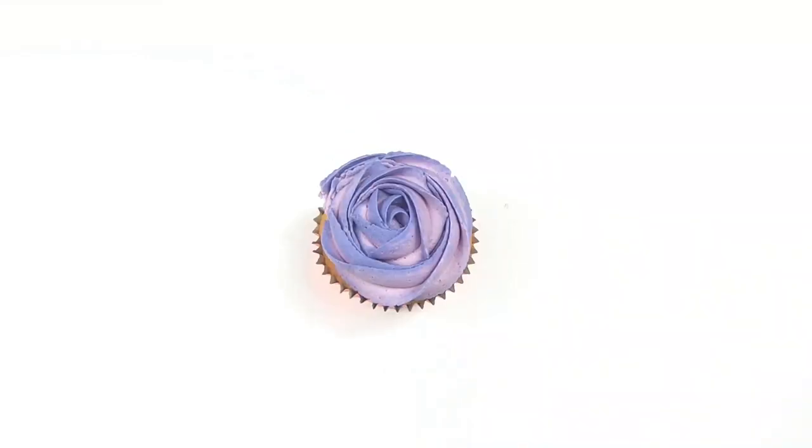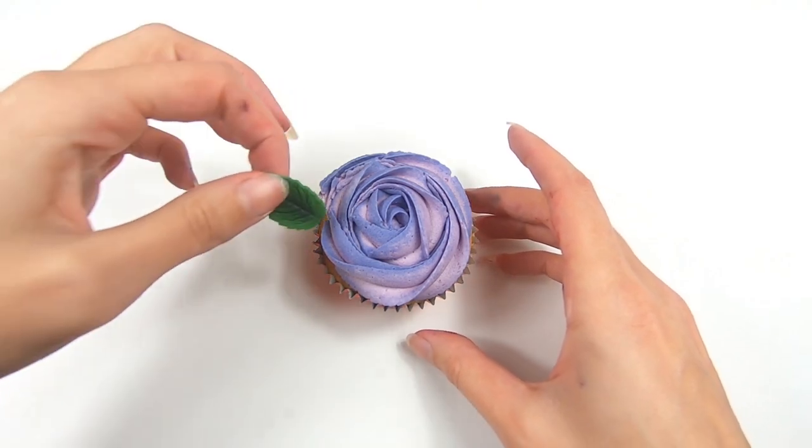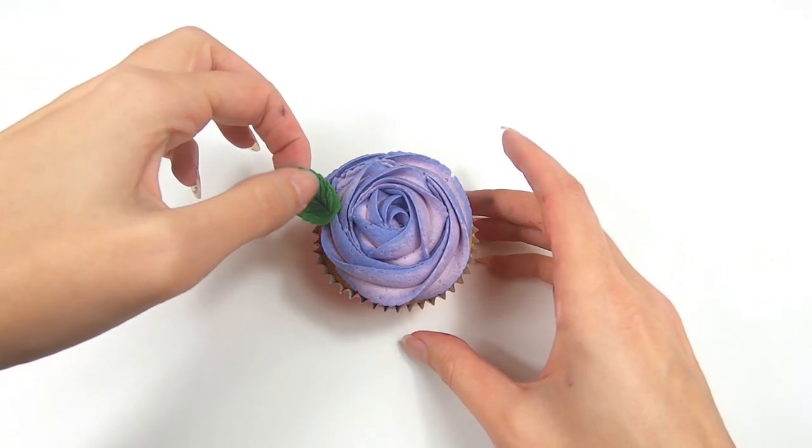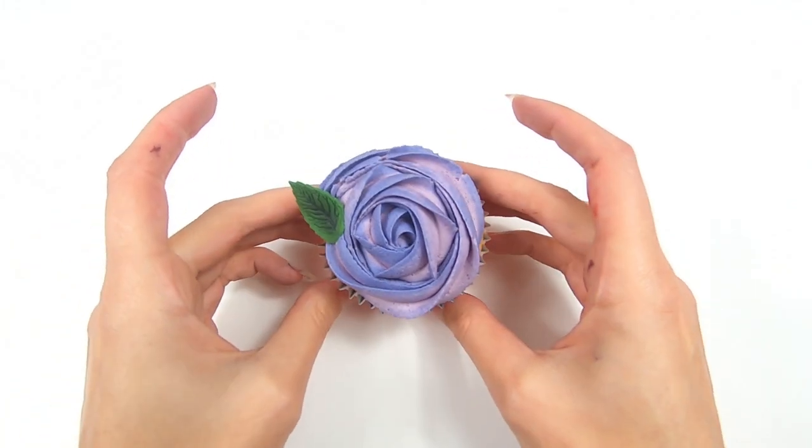Once we've got our buttercream rose, the last thing to do is add our edible leaf that we made earlier. Just pop one of those and put it in the area where you left off with the buttercream frosting.